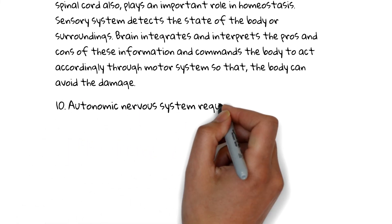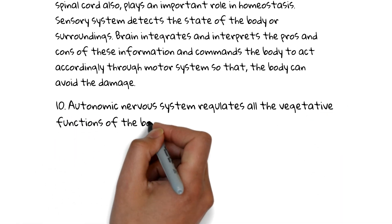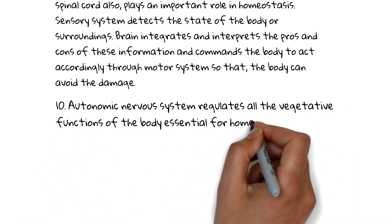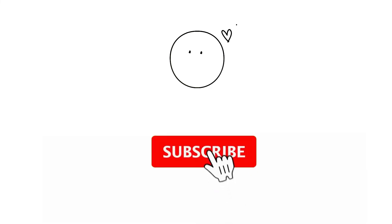The autonomic nervous system regulates all the vegetative functions of the body essential for homeostasis. I hope you liked the video — don't forget to subscribe to the channel. Thanks for watching, and see you in the next video.